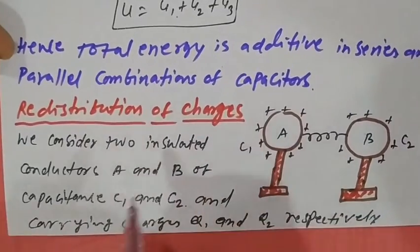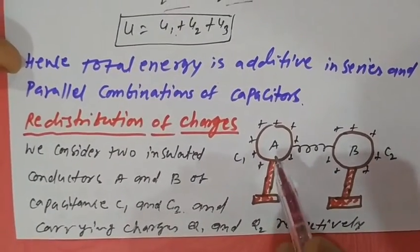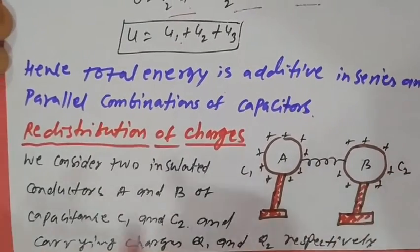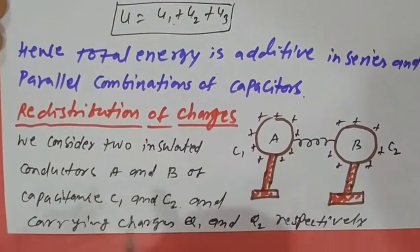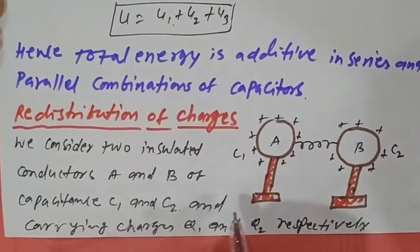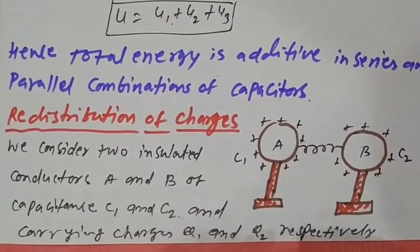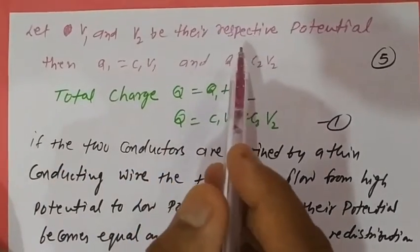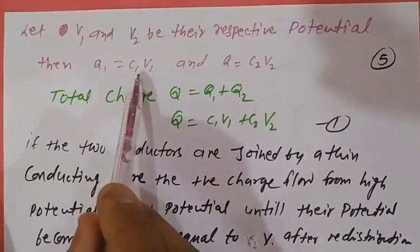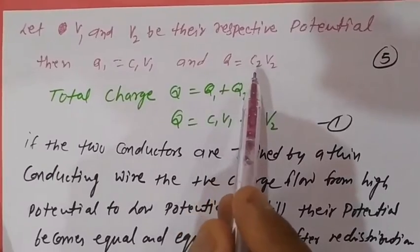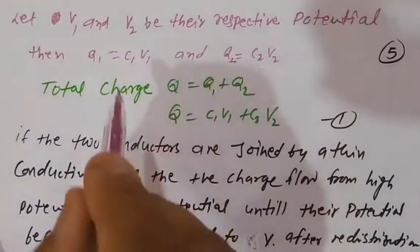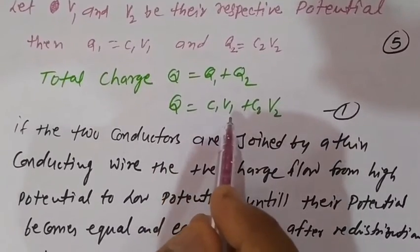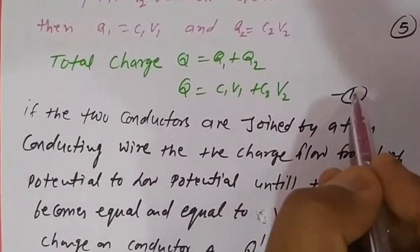Redistribution of charges. We consider two insulated conductors A and B of capacitance C1 and C2 carrying charges Q1 and Q2 respectively, with no connection between them. Let V1 and V2 be their respective potentials, then Q1 = C1V1 and Q2 = C2V2. Total charge Q = Q1 + Q2 = C1V1 + C2V2. This is equation number one.